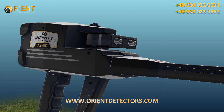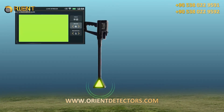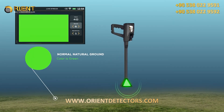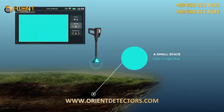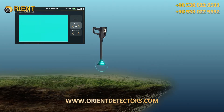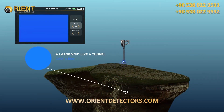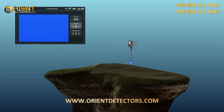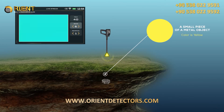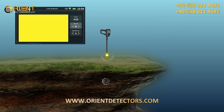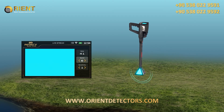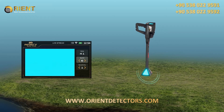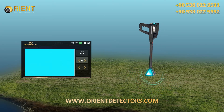The following is a description of the color connotations: Green — normal, natural ground. Light blue — a small space. Blue — a large void, like a tunnel. Yellow — a small piece of a metal object. Red — gold or a larger piece of a metal object. During the live stream, the LED lights on the head of the VST probe display the same color as the screen, making it easier for the user to focus on the scan process instead of looking at the screen.